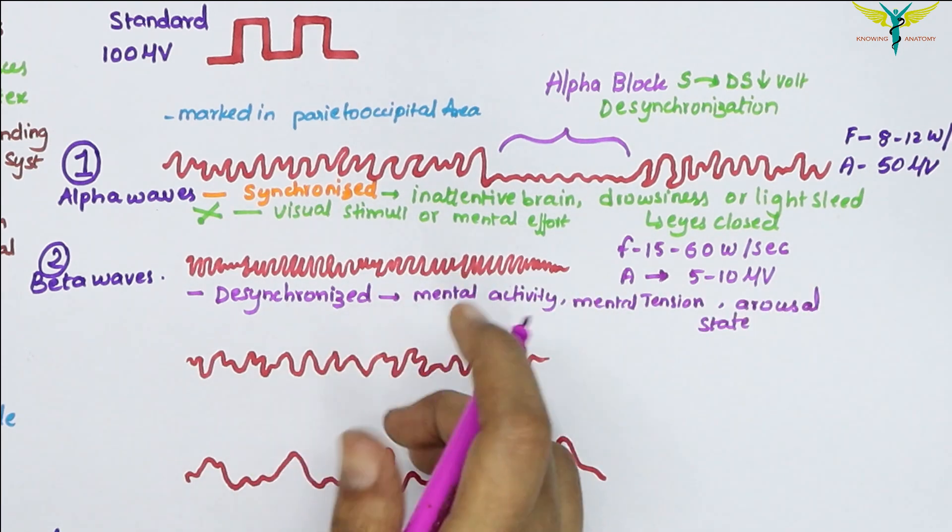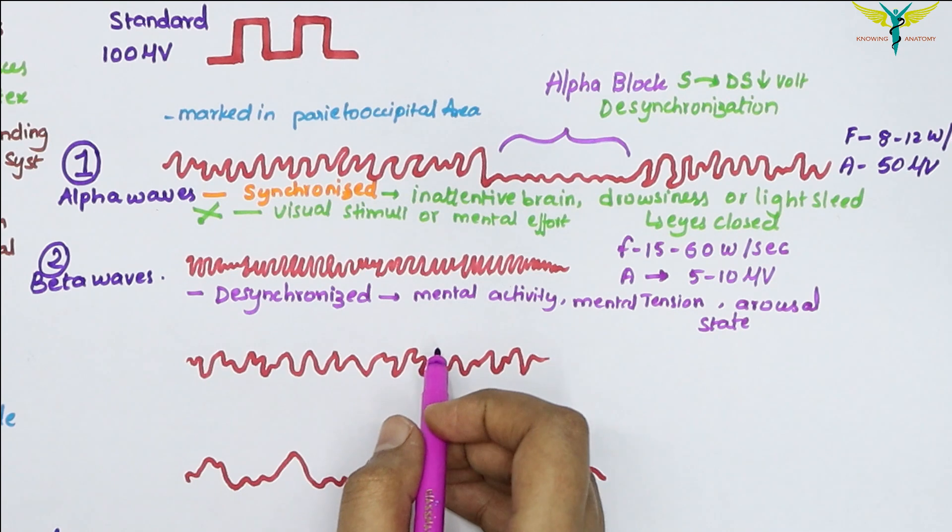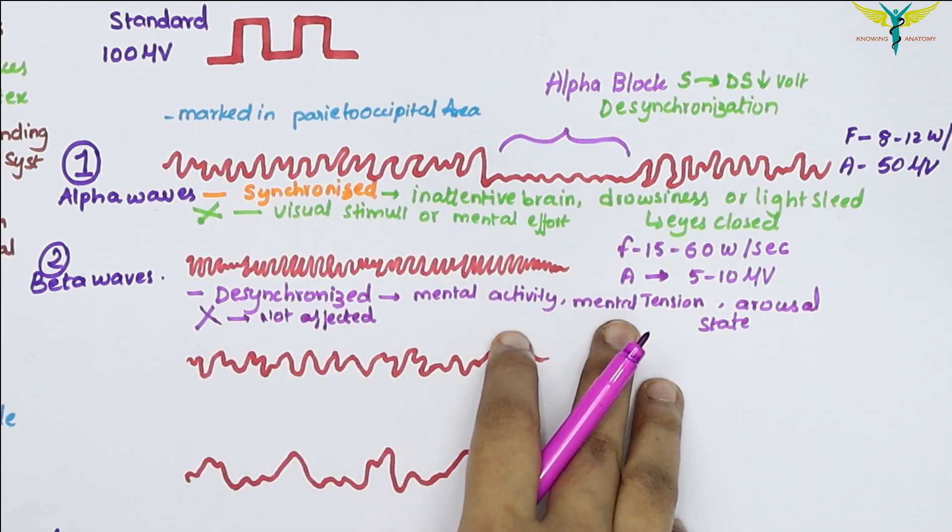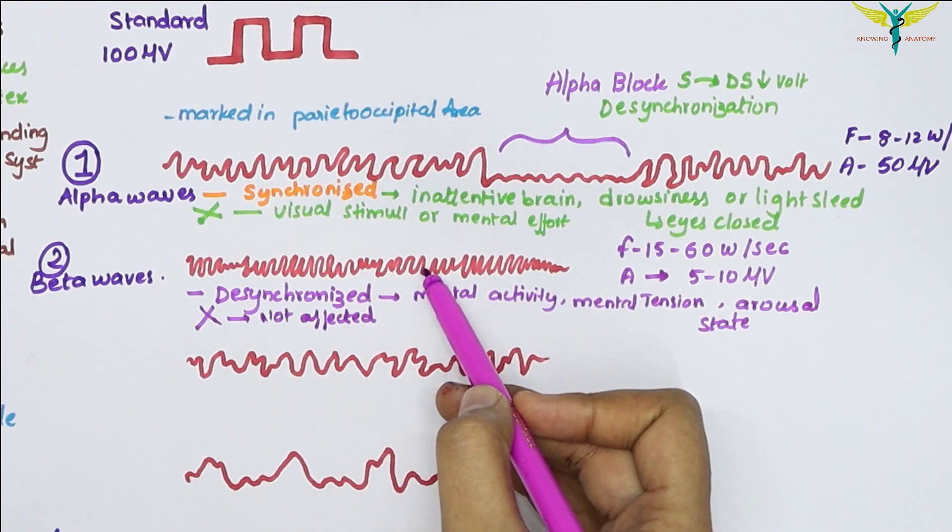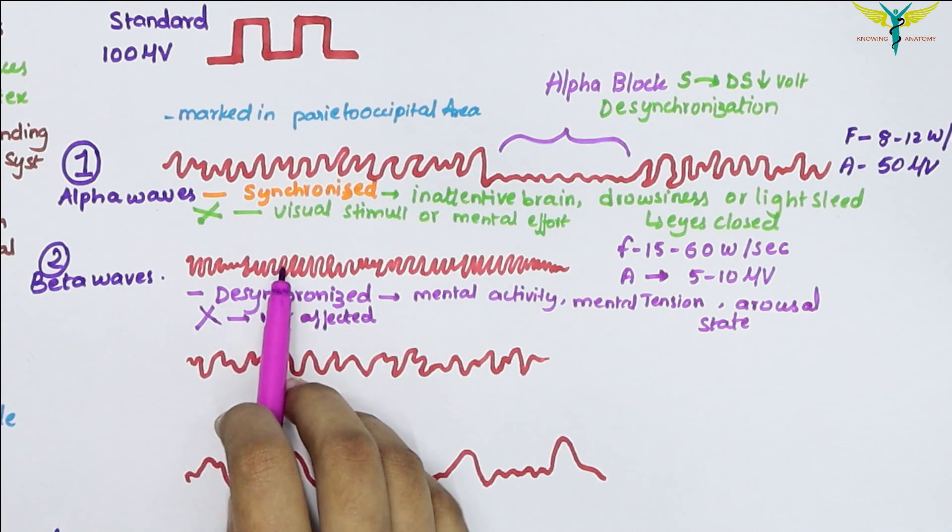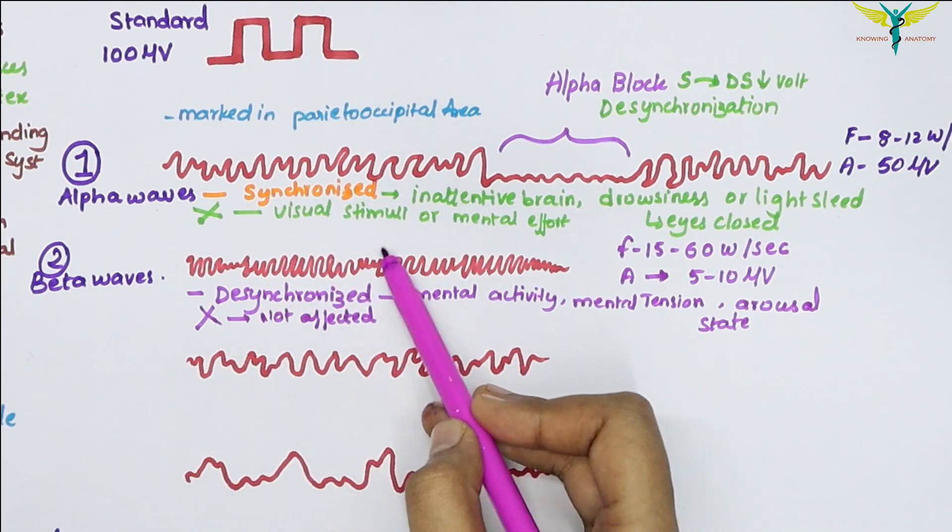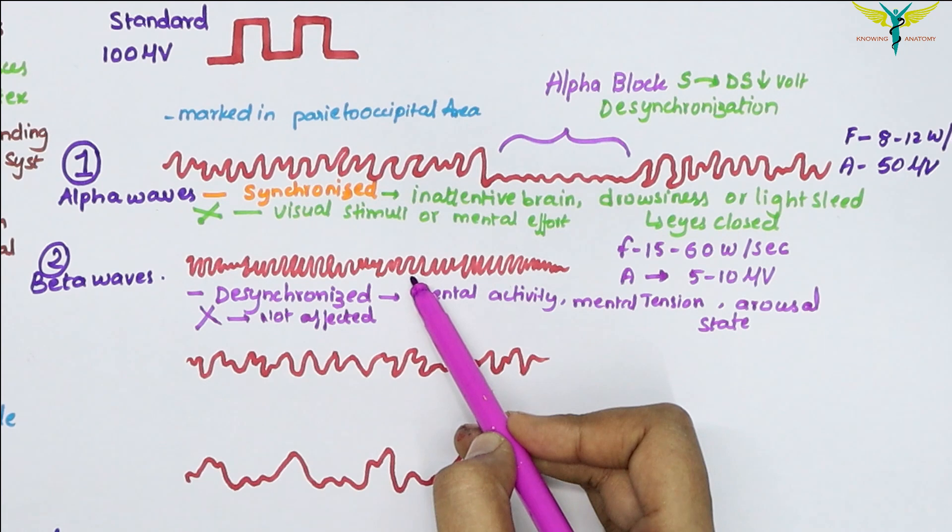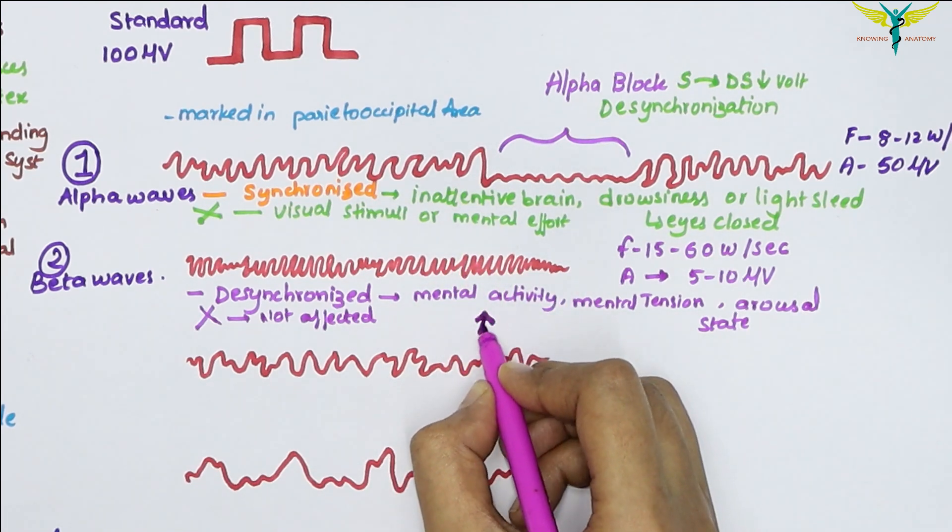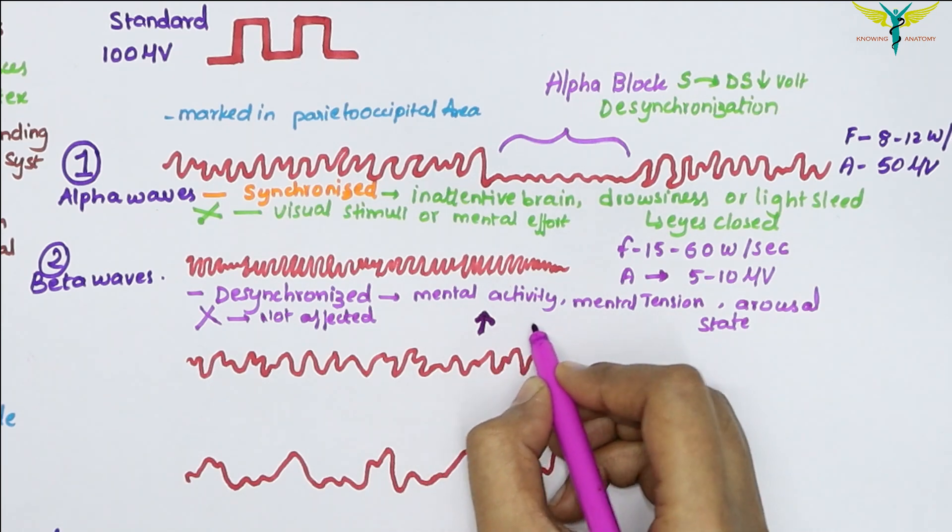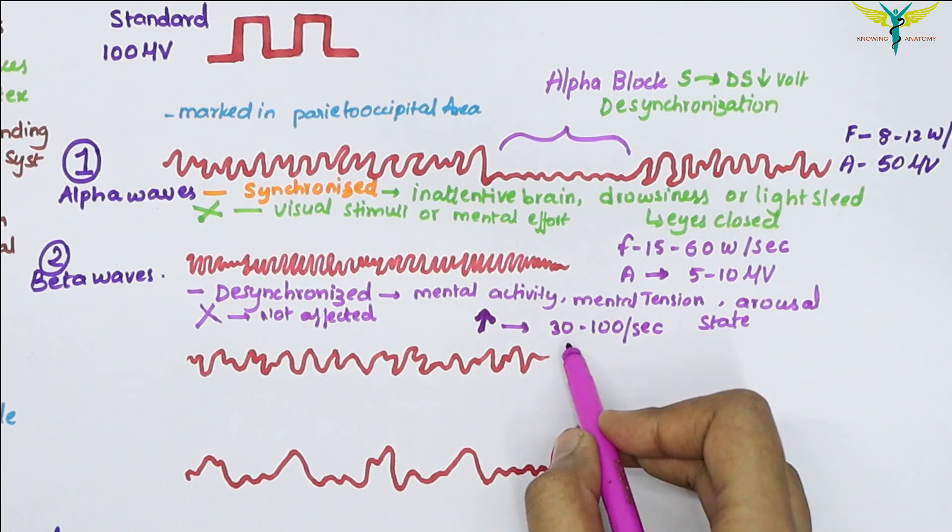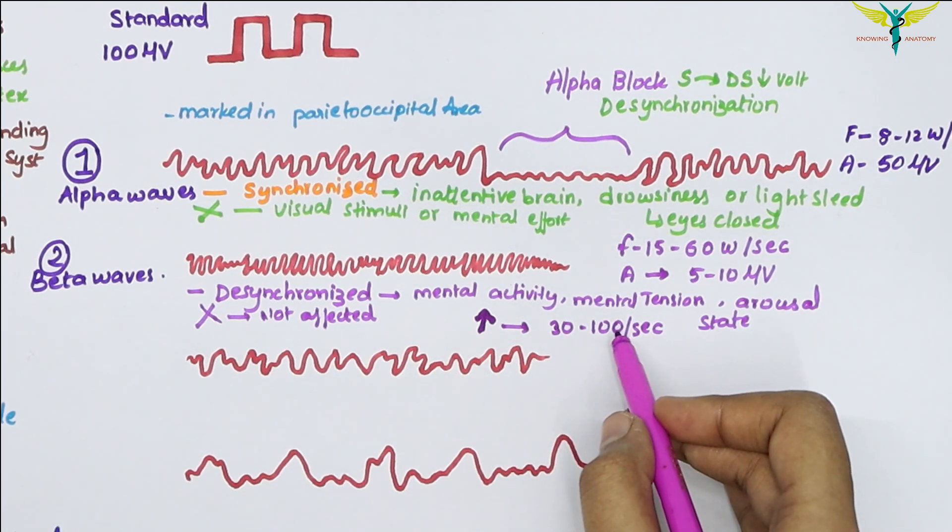The beta rhythm is recorded during mental activity or mental tension or during the arousal state. These beta waves are not affected due to the opening of the eyes. Due to higher mental activity or peak performance, like the state of conscious activity or problem-solving state, and in fear, very high frequency of these waves, 30 to 100 per second, appear.